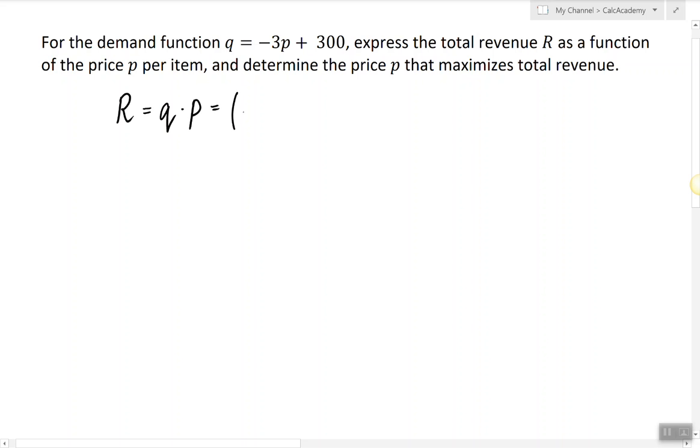In this case, since the quantity is also a function of the price, we get the following expression that represents the revenue function as a function of p. We can simplify this function and distribute p to write it in standard form.